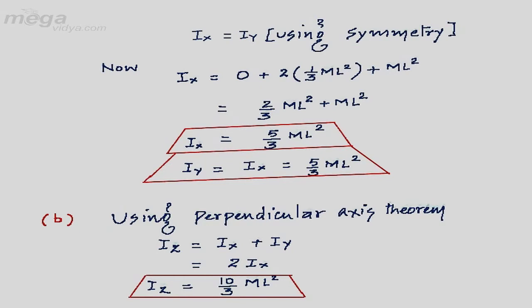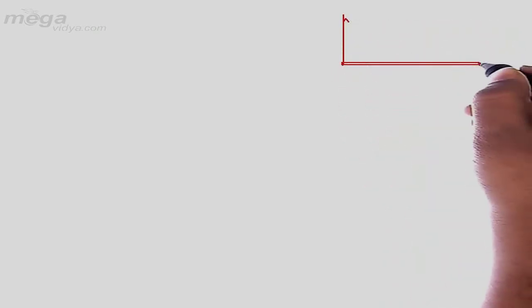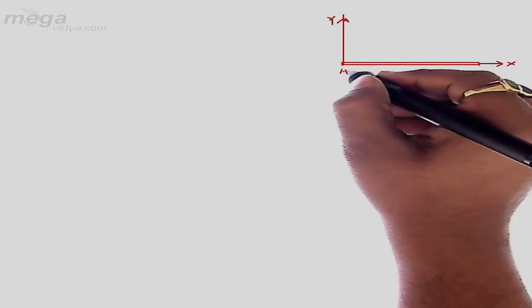Now let's see the second illustration. A rod of length L is placed along the x-axis with one end at the origin. The mass is not constant — it increases with length by the relation dm/dx = λx. We have to calculate the moment of inertia along the y-axis and also along the centroidal axis, which is the axis passing through the center and perpendicular to its plane. The length of the rod is L.